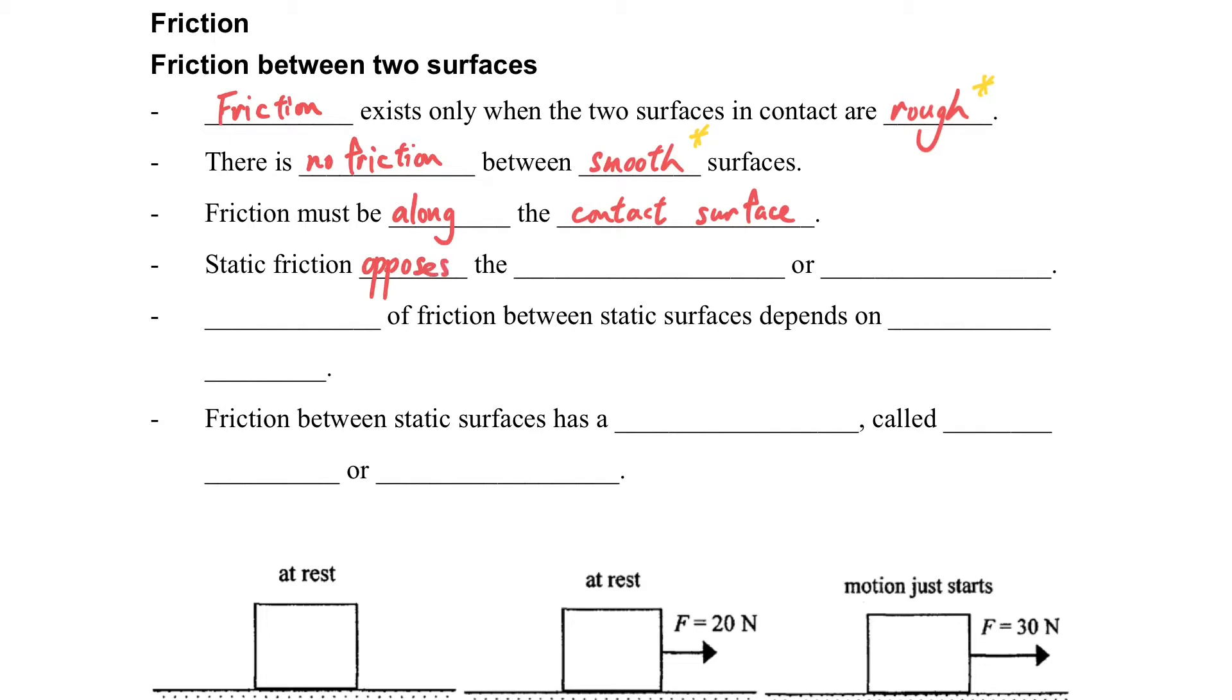For static friction, it opposes the tendency of motion or prevents sliding. What does it mean? When we consider the diagram below, we will understand more.